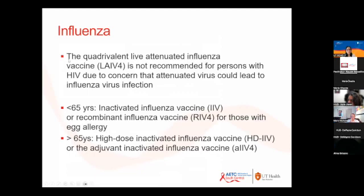For influenza, the quadrivalent live attenuated influenza vaccine is not recommended. For patients under 65, use the inactivated influenza virus vaccine or recombinant for those with egg allergy. For patients 65 and older, use the higher-dose vaccine or the new adjuvanted formulation, which is more immunogenic in older individuals.